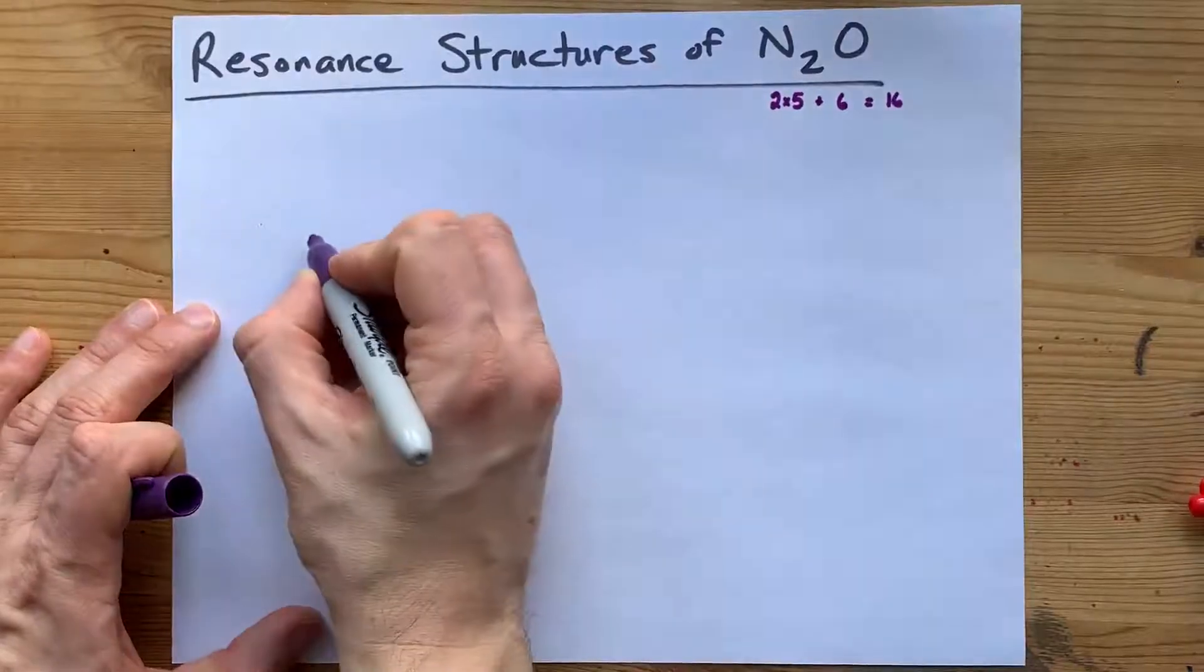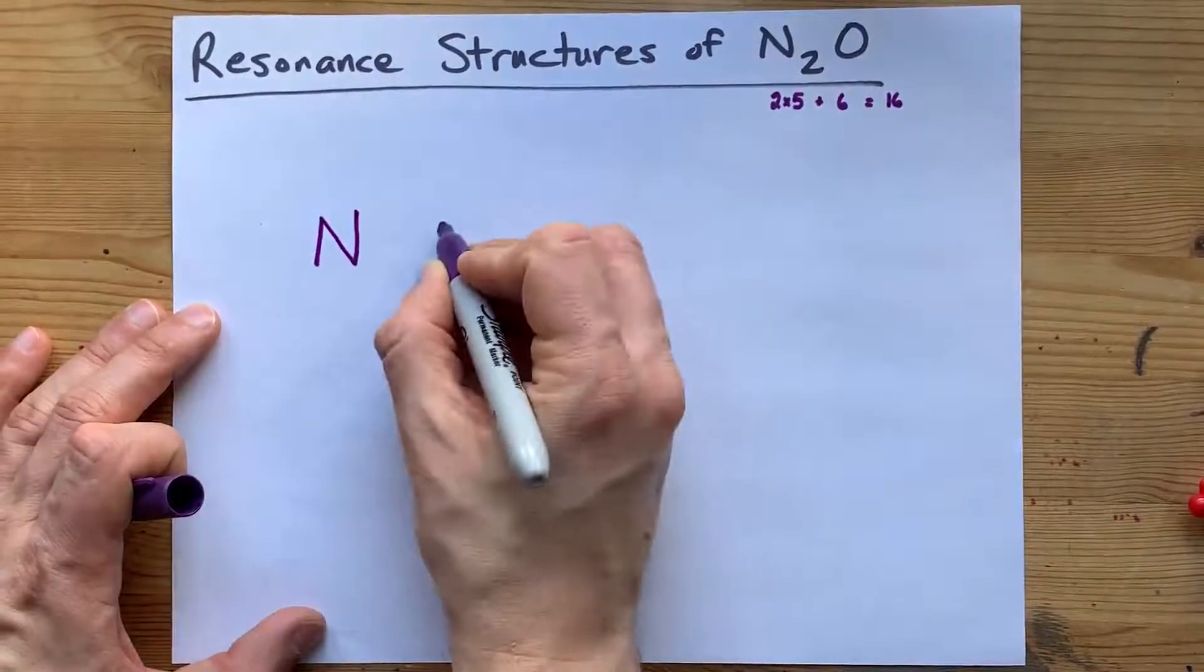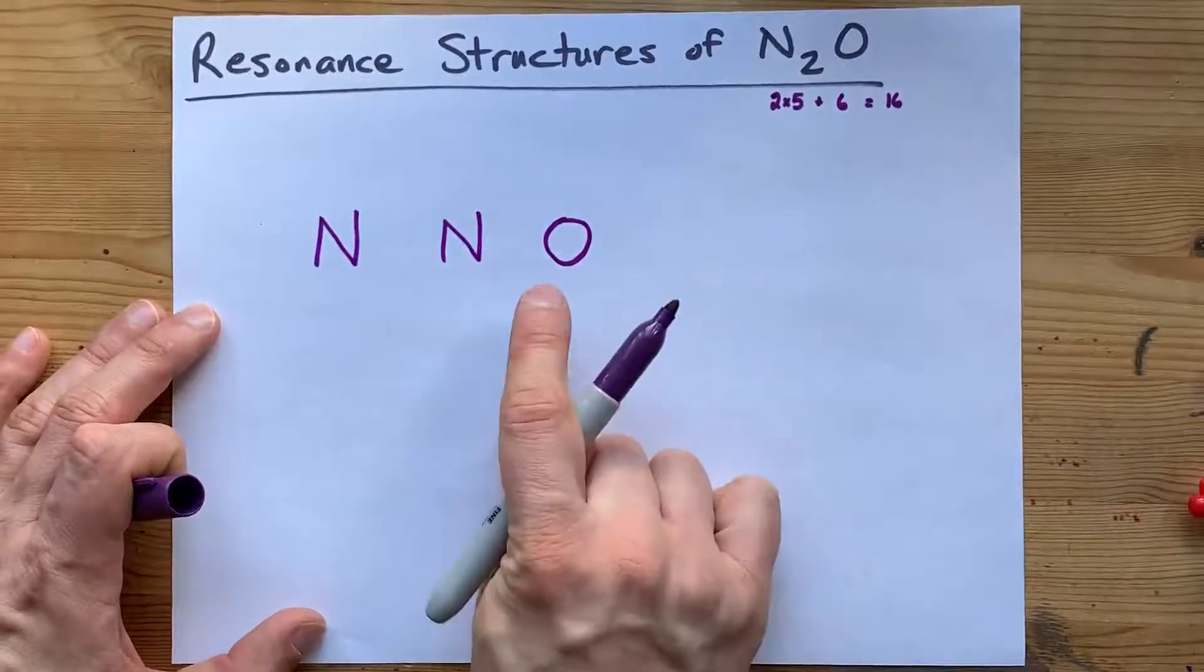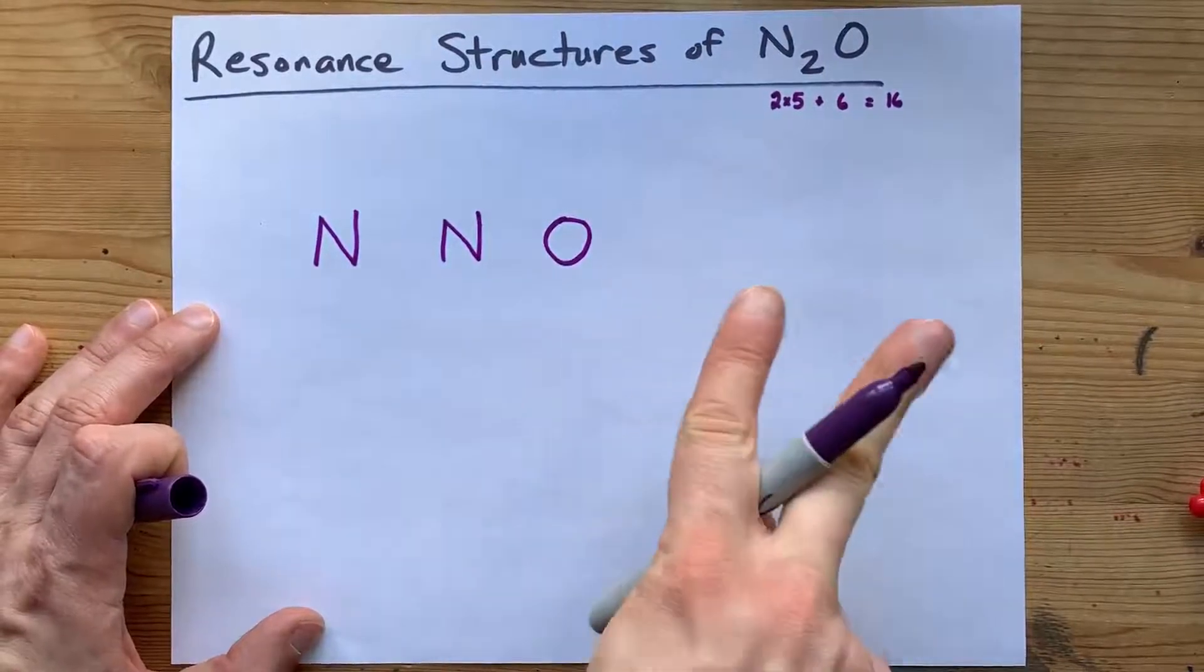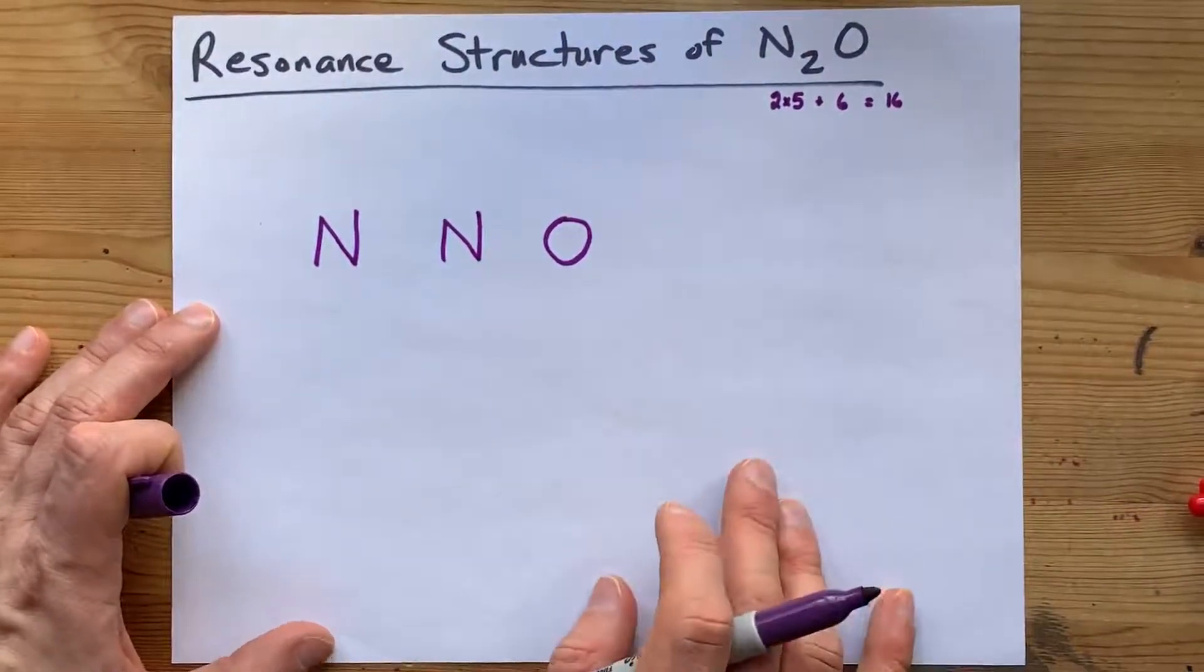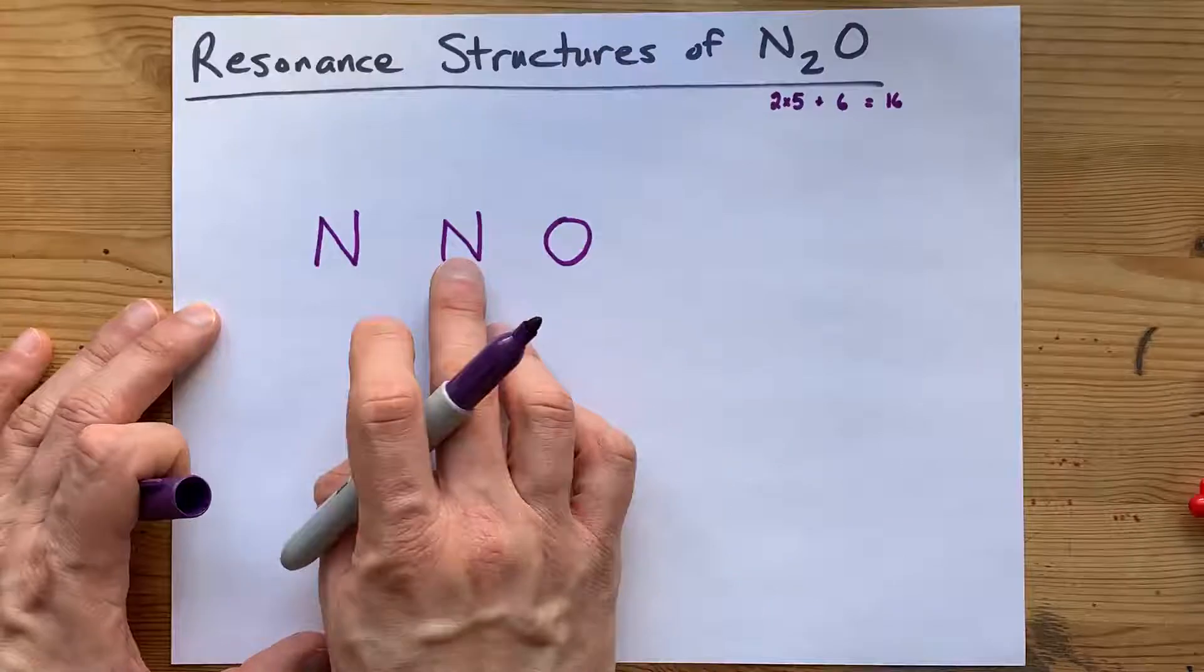Now, N2O actually has a nitrogen connected to another nitrogen connected to an oxygen. Oxygen can only really handle about 2 bonds. Nitrogen can handle 3, sometimes even more bonds, so I put it in the center.